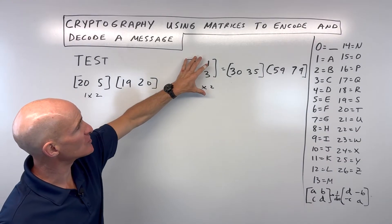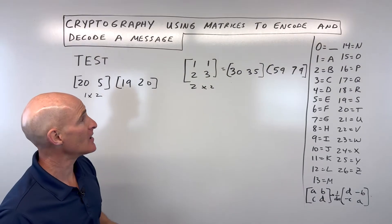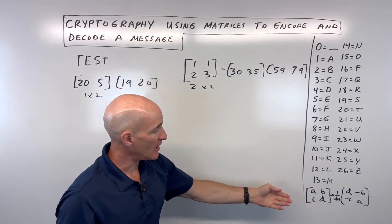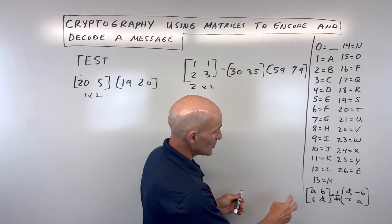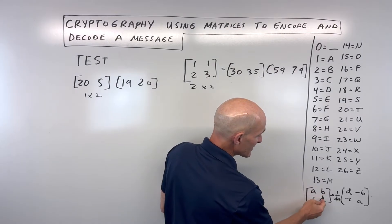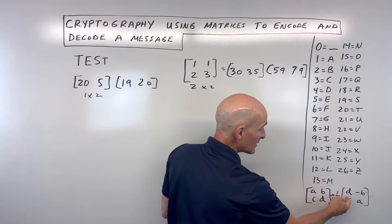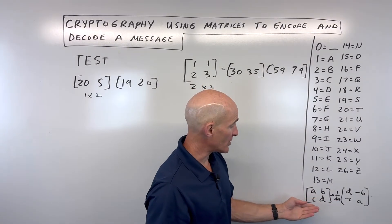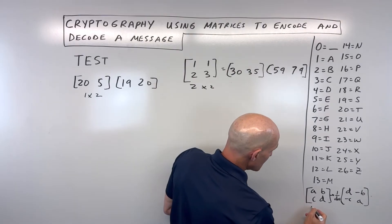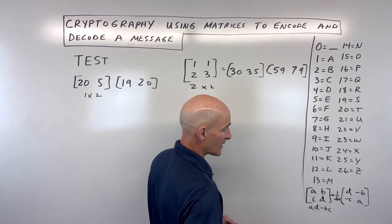And in order to do that, what we're going to have to do is find the inverse of this matrix in order to undo those steps. So you probably remember how to find the inverse of a 2 by 2 matrix. What you do is you switch the A and the D on this diagonal here. The B and the C stay in the same position, but you make them the opposite sign. If they're positive, you make them negative. If they're negative, you make them positive. And then you divide everything by the determinant of this original matrix.